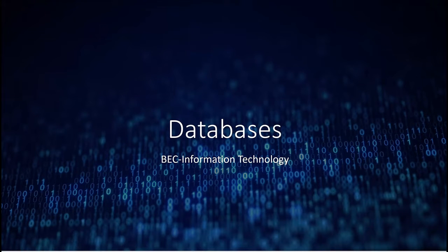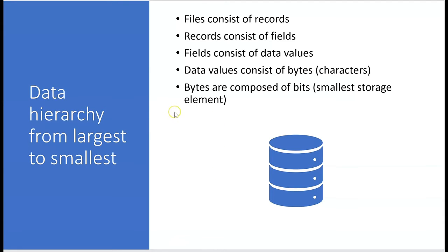What do we need to know about databases for the BEC exam? The data hierarchy from largest to smallest goes like this: you have files consisting of records, records consisting of fields, fields consist of data values — sometimes text, sometimes numeric. Data values consist of bytes or characters, bytes are composed of bits.